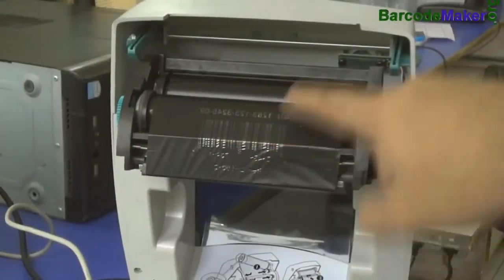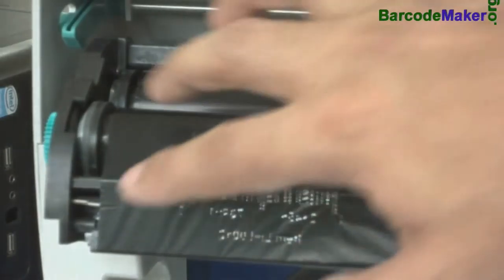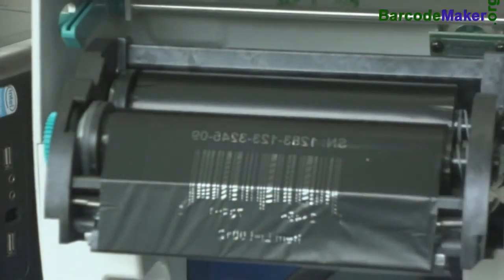The printer gets fresh ribbon from here and the used ribbon is rolled here. The printer ribbon can be used once only because it loses all color in the area printed.